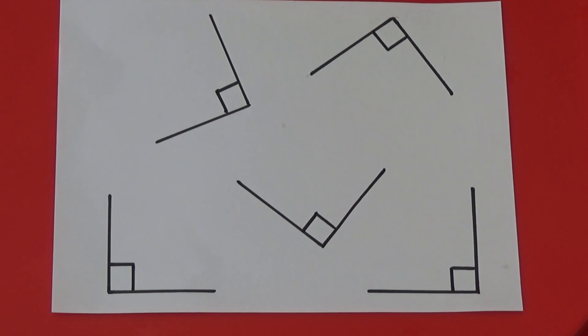These are all right angles. It doesn't matter which way they face, the small square between the two lines tells us an angle is a right angle.